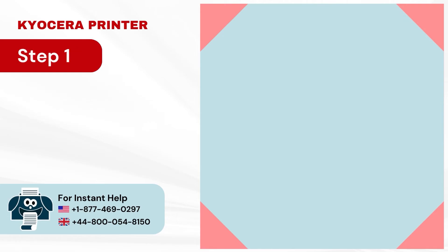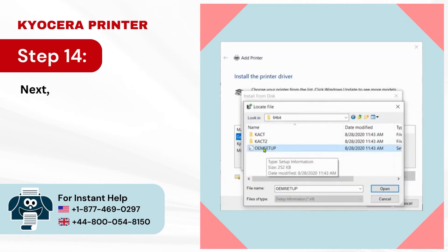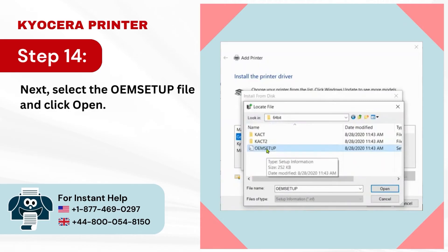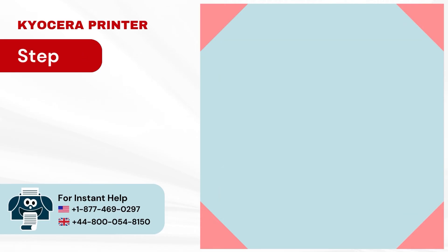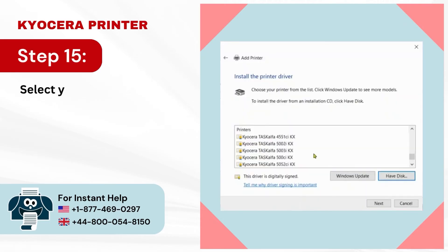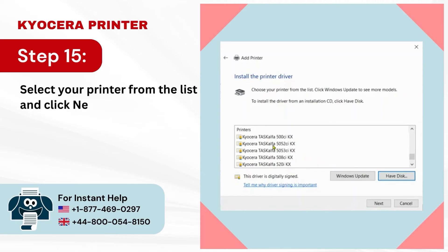Step 14: Next, select the msutup file and click Open. Step 15: Select your printer from the list and click Next.